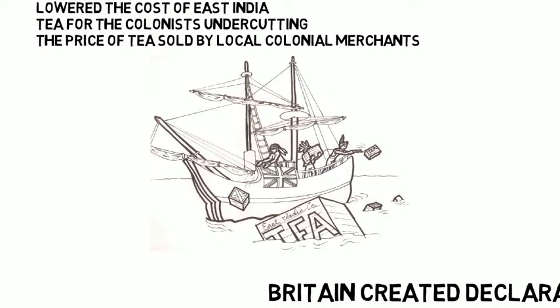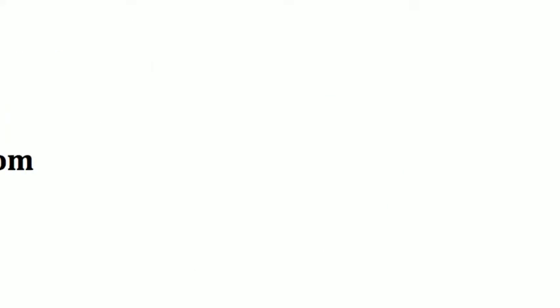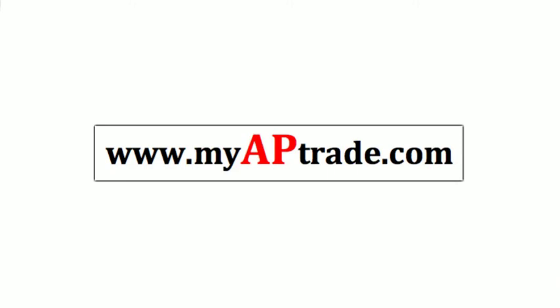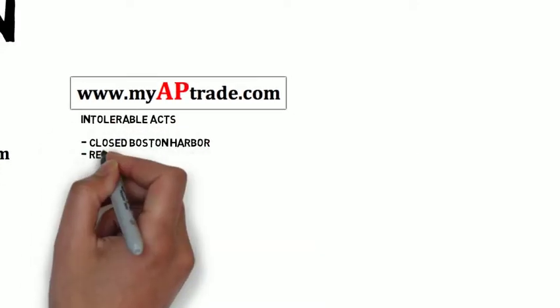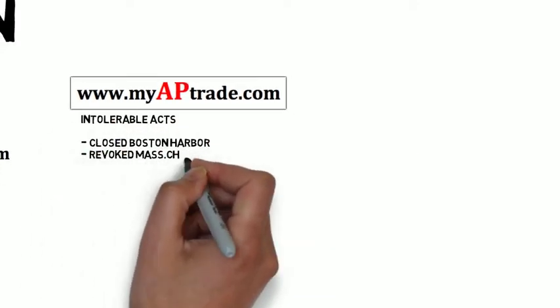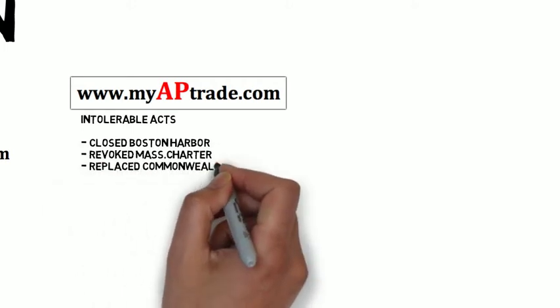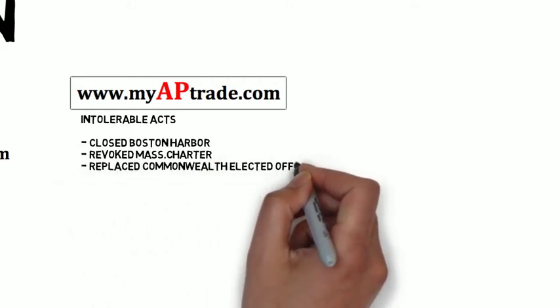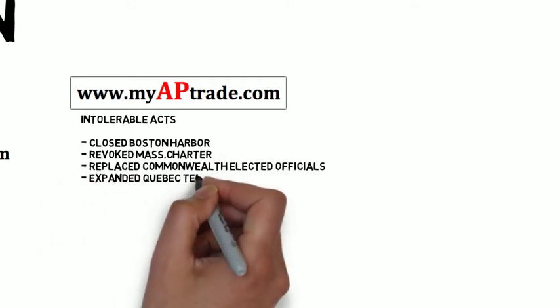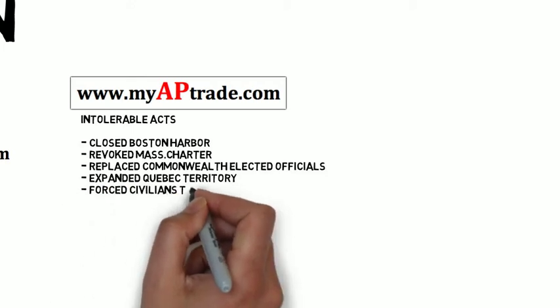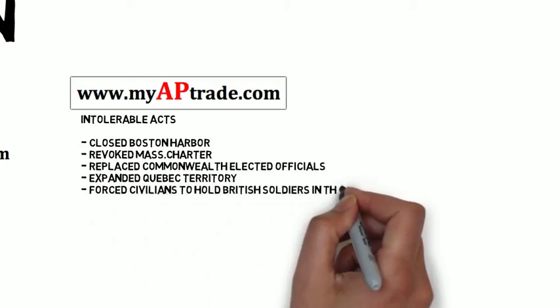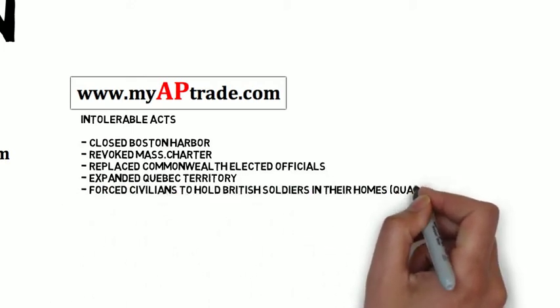The colonists' behavior wasn't well received by Britain, who as a response passed the Intolerable Acts of 1774. The Intolerable Acts closed Boston Harbor until the tea from the Boston Tea Party was paid for, revoked the Massachusetts charter, replaced Commonwealth elected officials, expanded Quebec territory, and forced civilians to hold British soldiers in their homes.